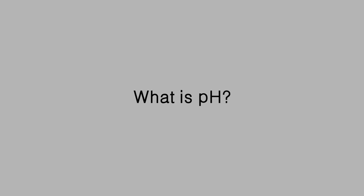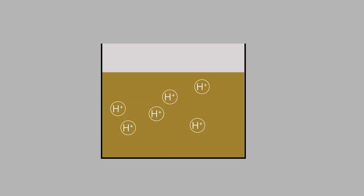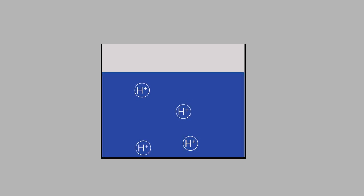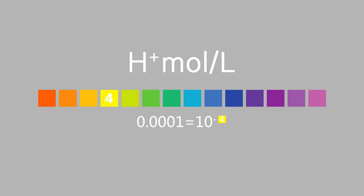So what is pH? In chemistry, pH, historically denoting potential of hydrogen or power of hydrogen, is a scale used to specify the acidity or basicity of an aqueous solution. The H in pH stands for hydrogen ions, H+, and the P generally means the negative logarithm of the quantity.